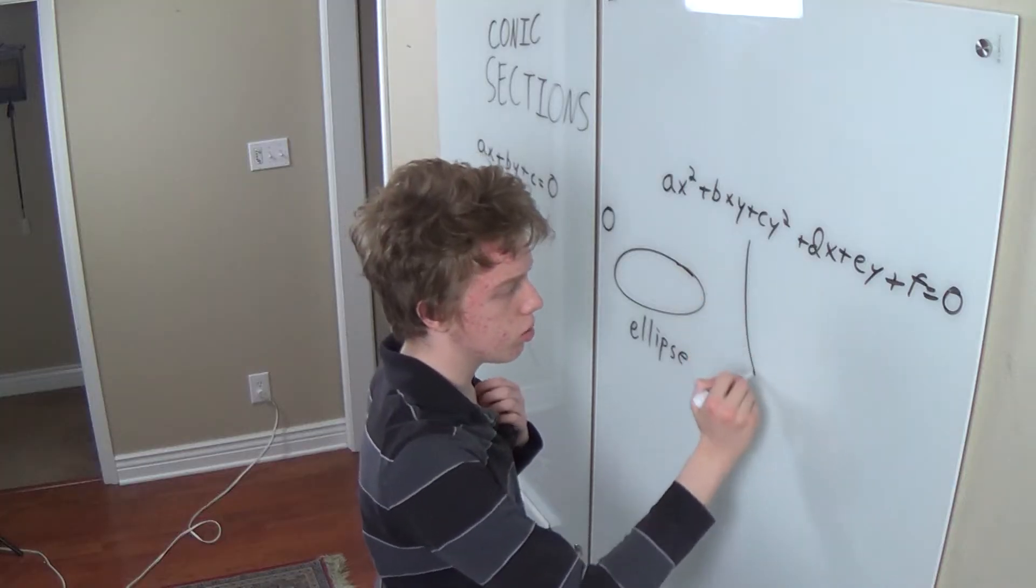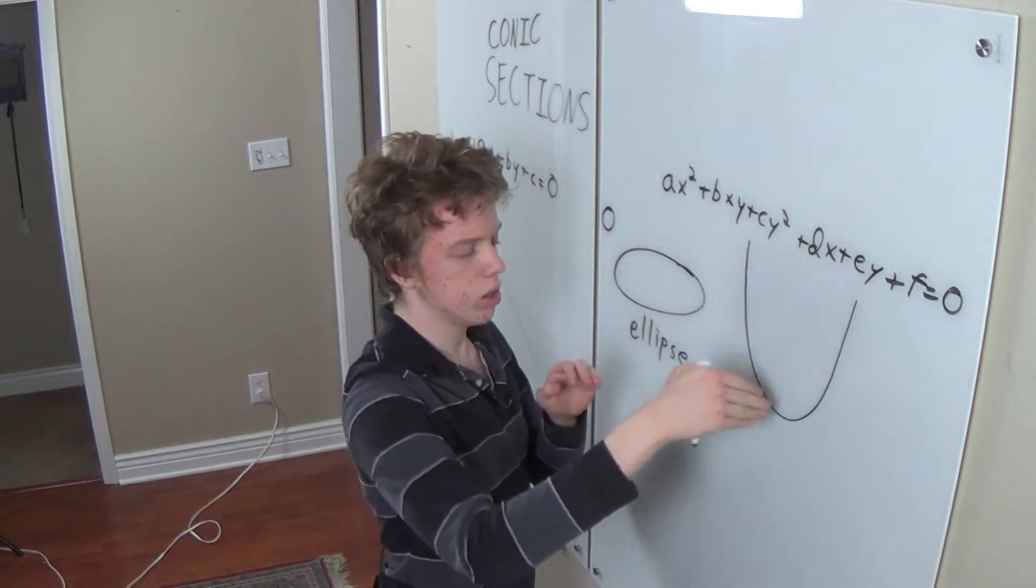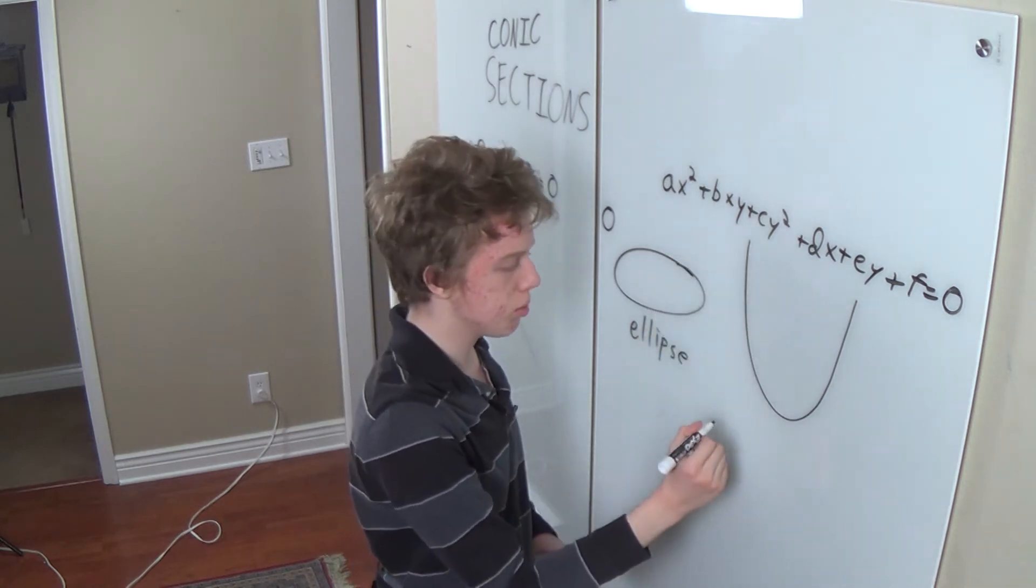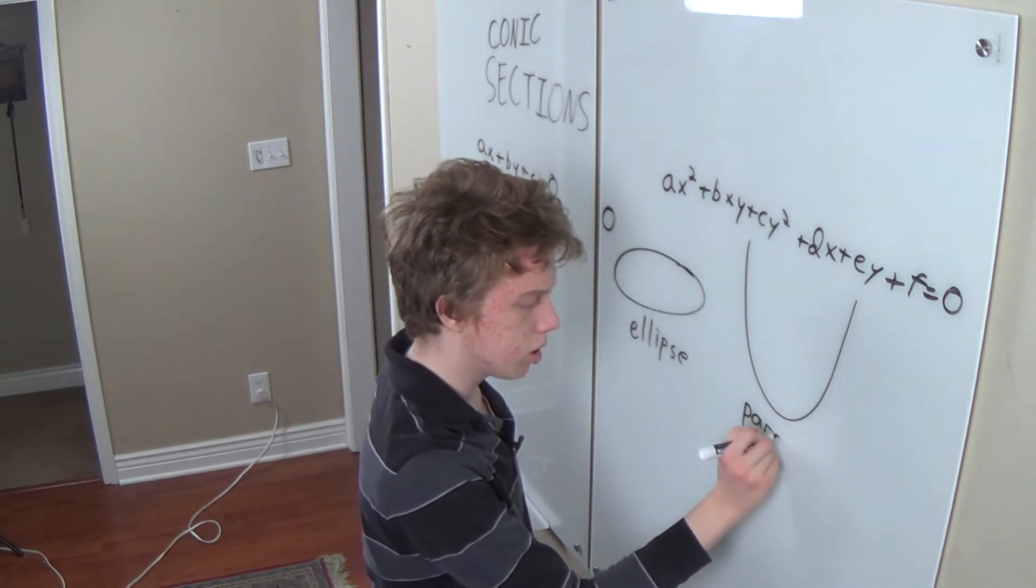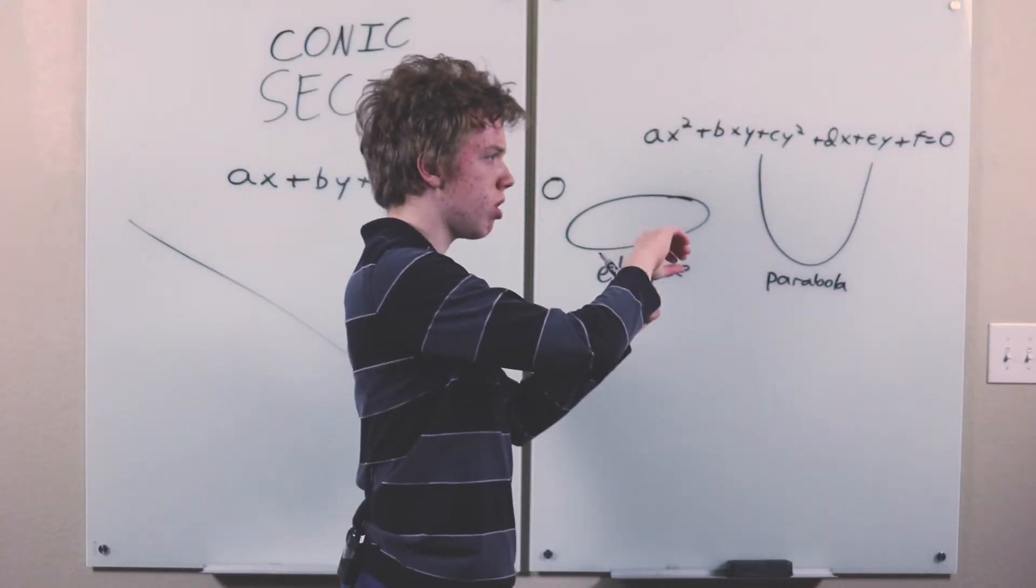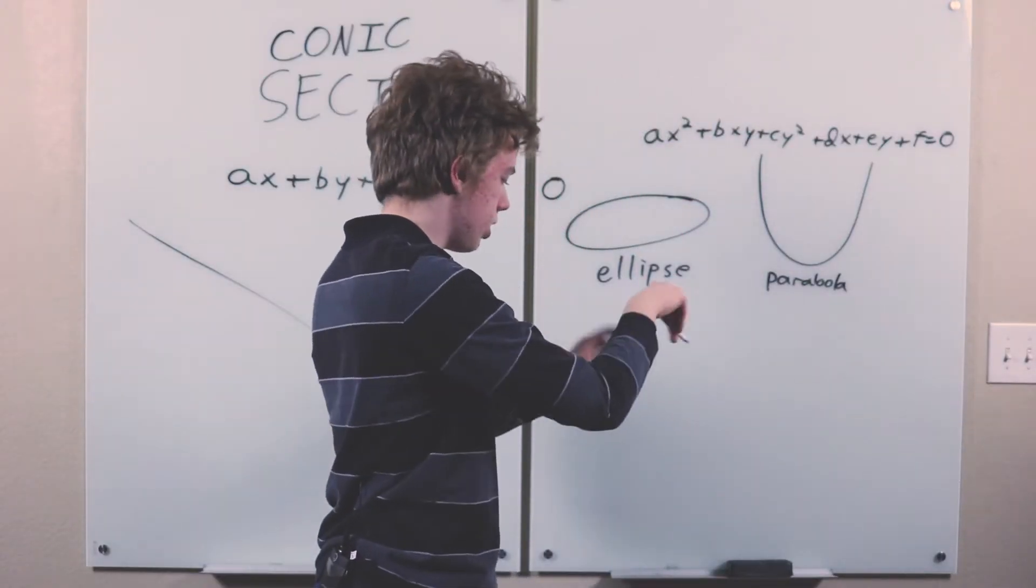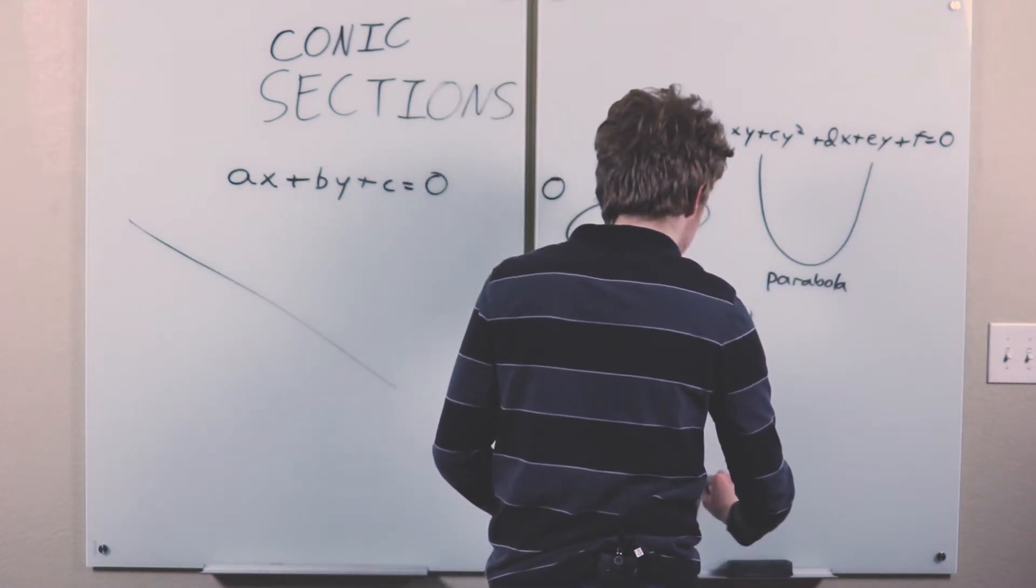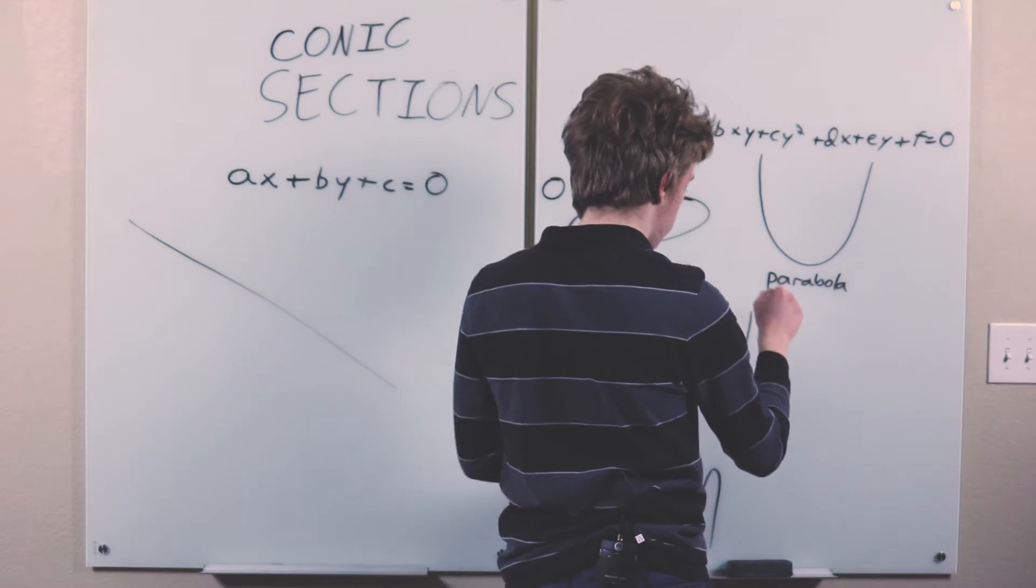Or there's the parabola that goes off, one curve goes off to infinity in both directions. And then there's a hyperbola, which has two separate parts and goes off to infinity in all those directions, with these two separate parts going off to infinity.